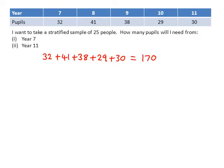So with a stratified sample question, the first thing you need to know is how many people there are in total. Normally, they tell you, but this question hasn't. So we're going to add up the number of pupils from each year group. So we're doing 32 plus 41 plus 38 plus 29 plus 30. And that gives us 170 pupils in total.